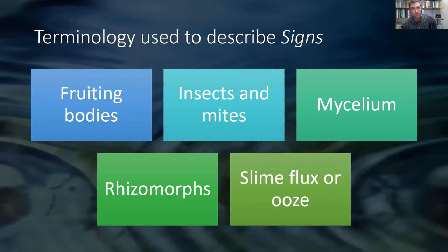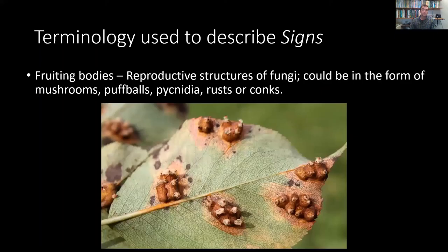Now let's look at a few different types of signs you're going to be looking for on your plants. One of those would be fruiting bodies — the reproductive structures of fungi. These can be mushrooms, puffballs, rusts, and conks, and you can see them on different parts of the plant, even on the underside of a leaf. These are the reproductive organs of the fungi, spreading their spores to reproduce. If you see this, it's a sign — a pretty good indication that there's a fungal infection. You may also see the actual bugs: mites, insects, scale, thrips, spider mites, mealybugs, aphids, and more.